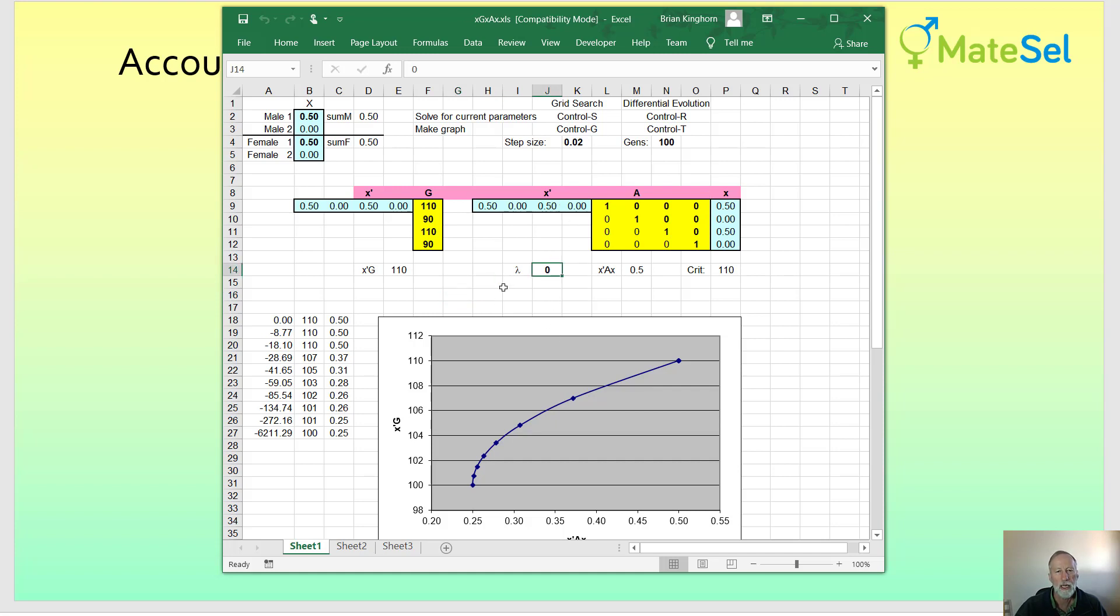And we have two candidate males and two candidate females, and the current solution is giving all the contributions to the first male and first female. And the reason for that is with no emphasis on co-ancestry, the genetic merit of the first male and first female is such that we would give them all the contributions.